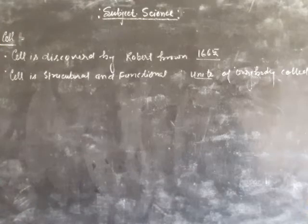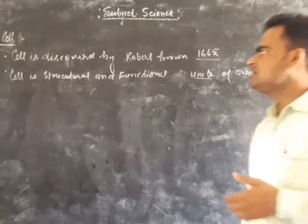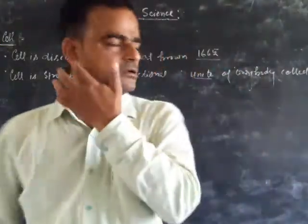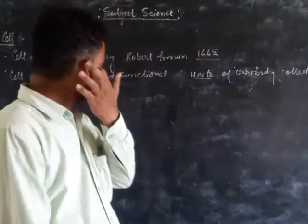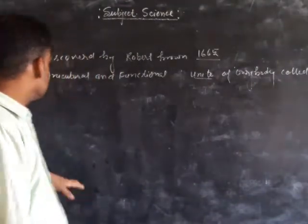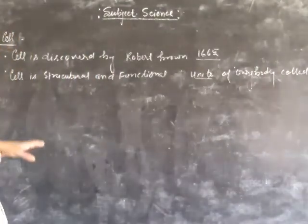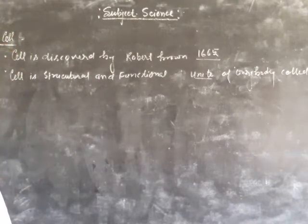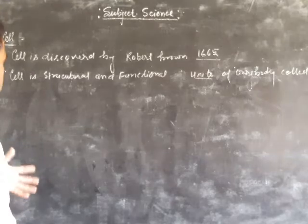The cells are different types. That is the animal cells and plant cells. The types of cells — any cell are two types. That is the cell of two types.